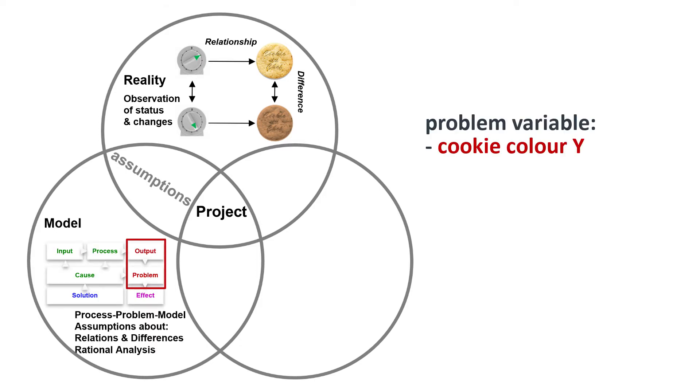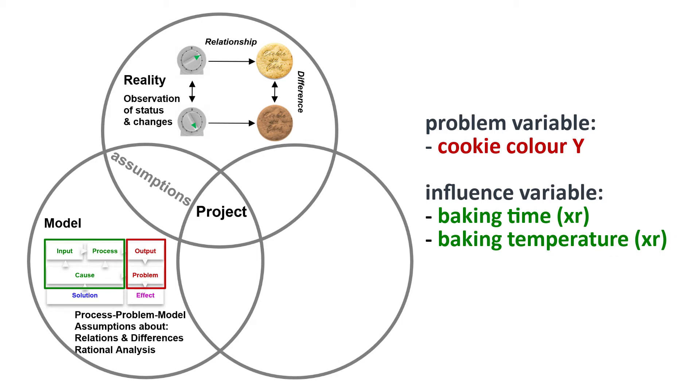The cookies and their variable color as output, Y, and the timer with the baking times as influencing resource, XR. Perhaps supplemented by observations on the oven and its baking temperature, also XR.